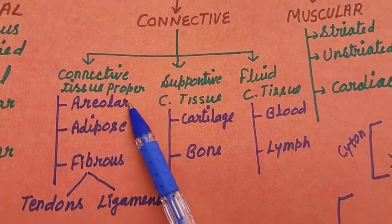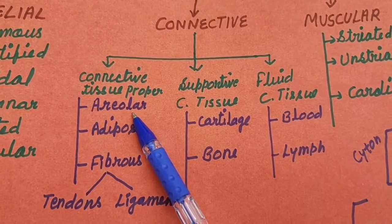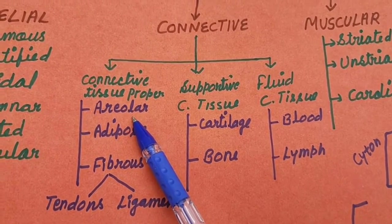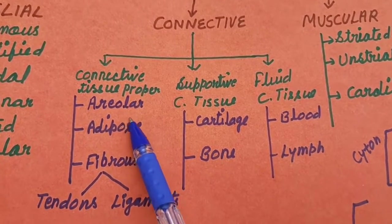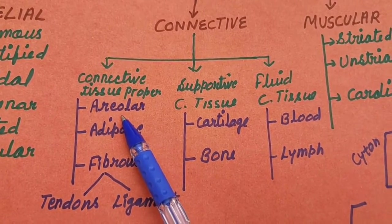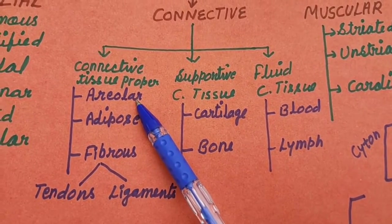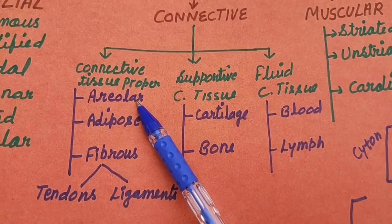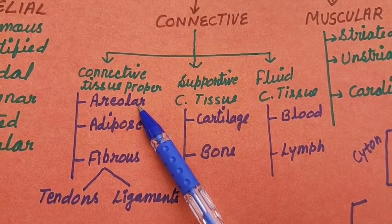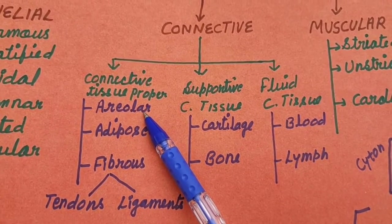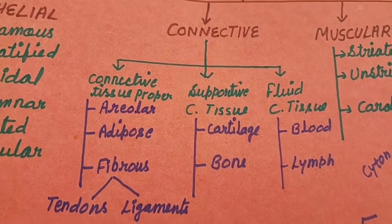Connective tissue proper - aureolar tissue, means packing tissue. Most widely spread in our body. Below the epidermis of our skin, aureolar tissue is present. And because of this aureolar tissue, our skin is elastic in nature. Means we can pull the skin and it helps it to withstand pulling strain.